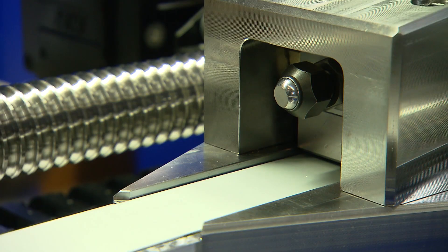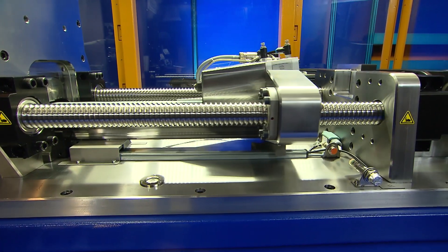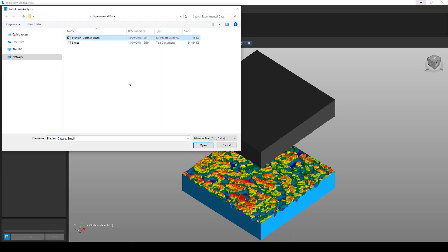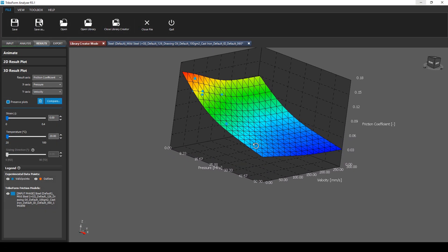Based on the friction experiments performed for different experimental settings, the friction coefficients can be determined. You can directly import the friction data into the TriboForm software and visualize the measured friction coefficients.